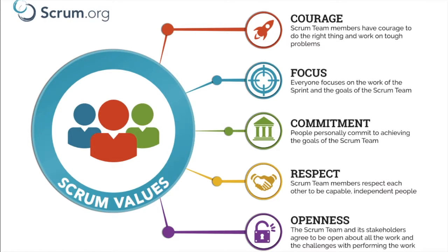The fourth Scrum value is respect. Each member of the Scrum team respects each other's capabilities, and they are independent individuals. Everyone respects others' opinions and discusses the best possible solution to implement, whether to solve technical issues or to achieve the sprint goal. It's not everyone working in silos — it's a collaborative effort, listening to and respecting the thoughts and opinions of everyone to come up with the best possible solution for the client.